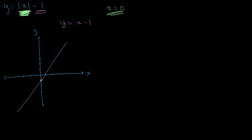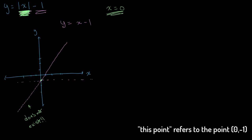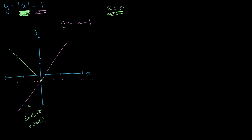At x = 0, the absolute value expression equals zero, giving us the lowest possible point on the graph. Nothing below this point exists, so we make that portion a dotted line to indicate it doesn't exist. This time, instead of reflecting along the x-axis, we reflect the portion of the graph below this minimum point about that minimum point itself. The final graph for y = |x| − 1 looks like a V-shape with its vertex at (0, −1).